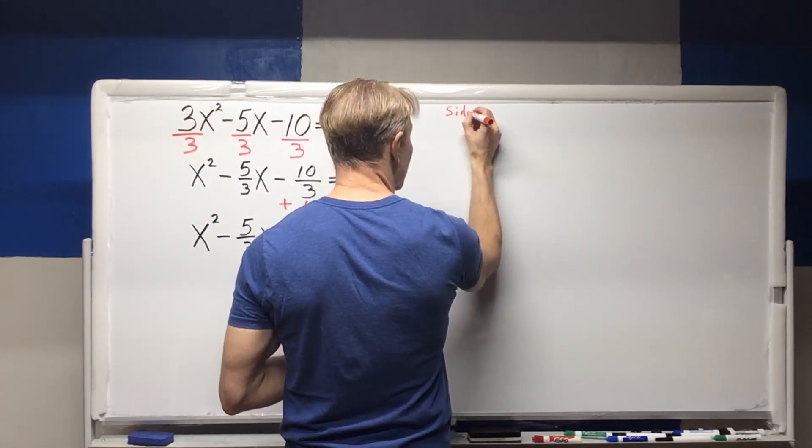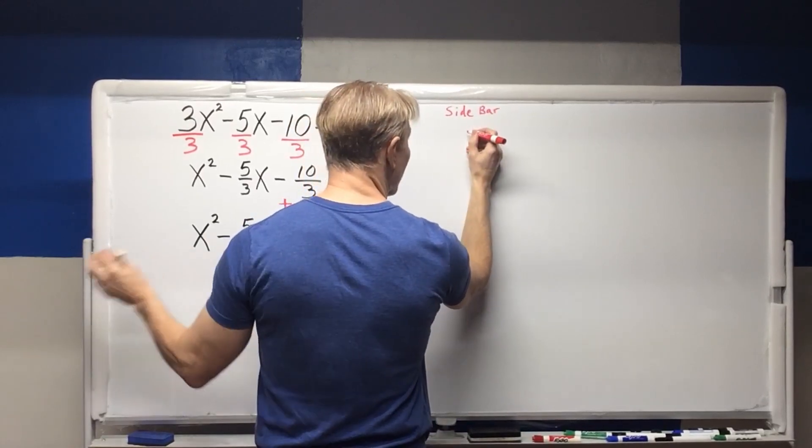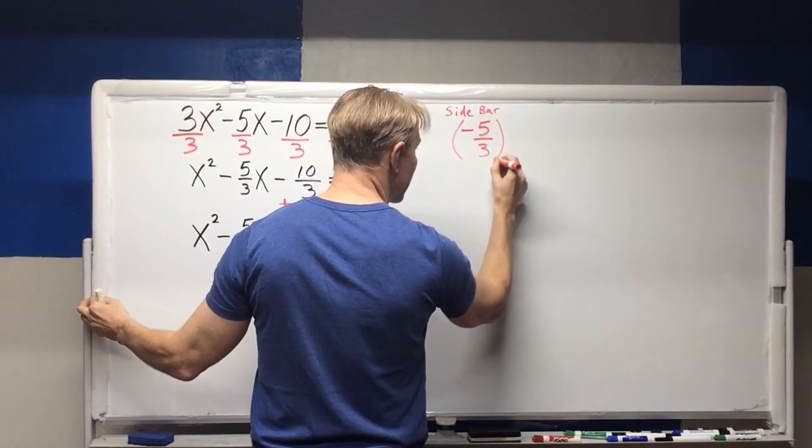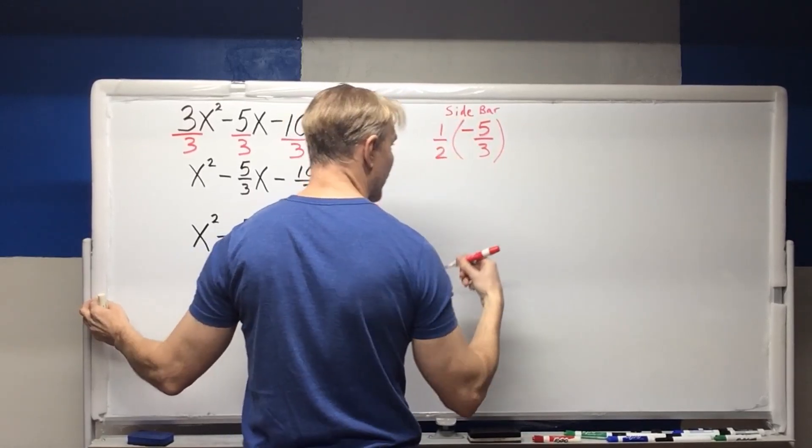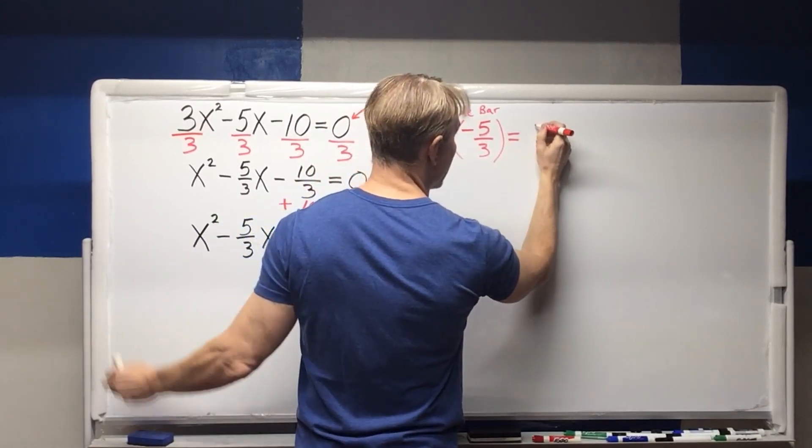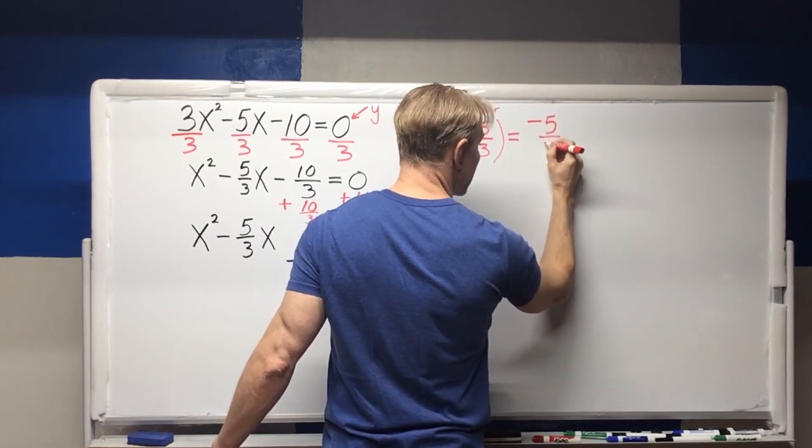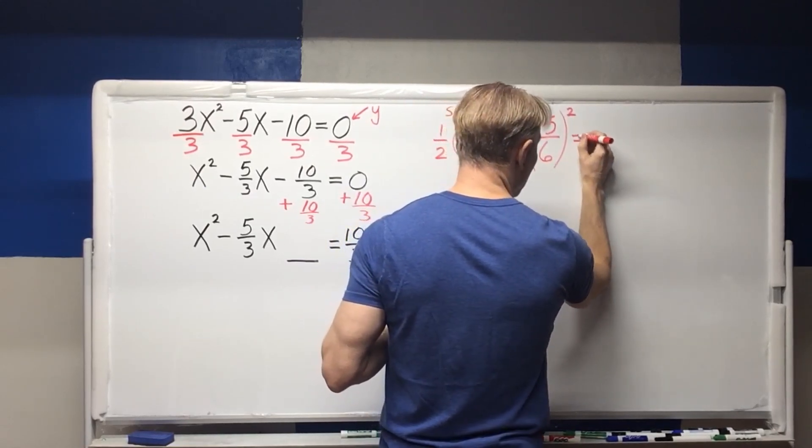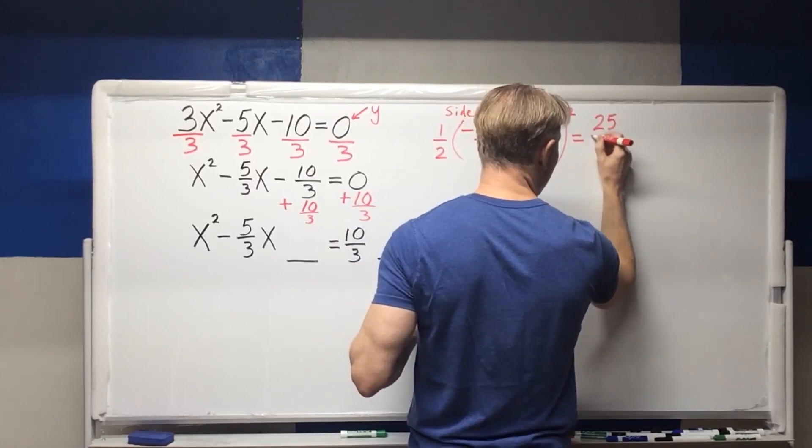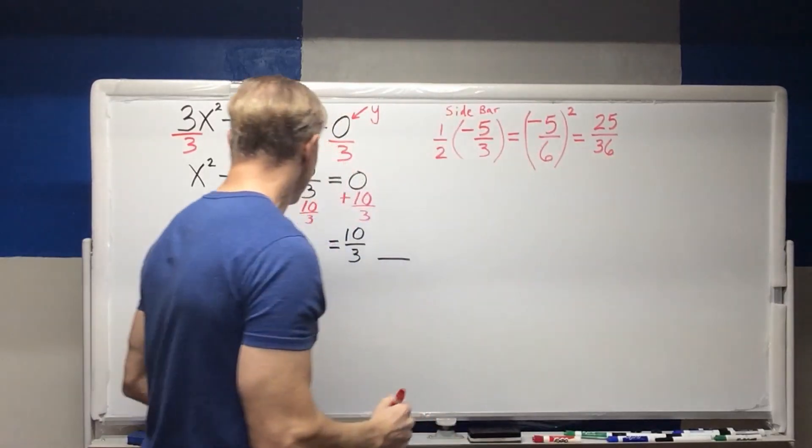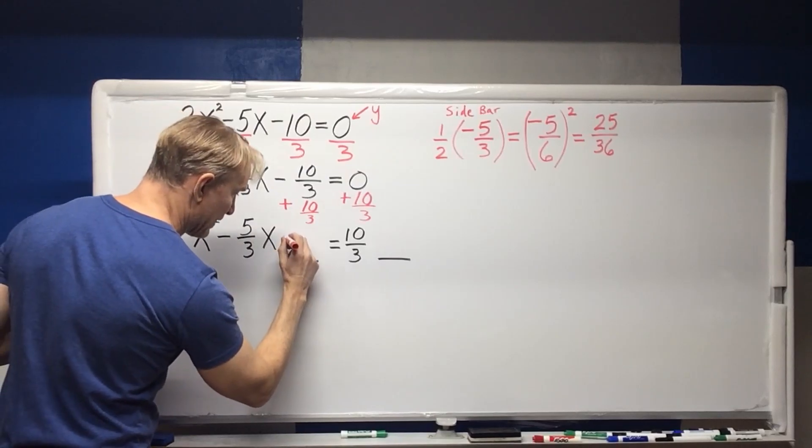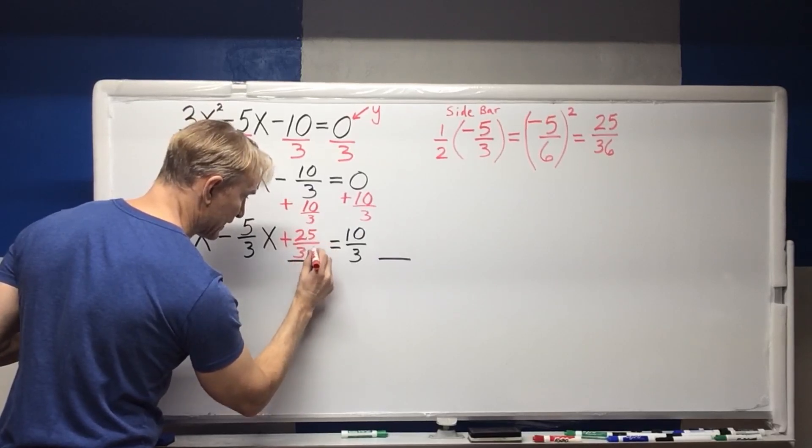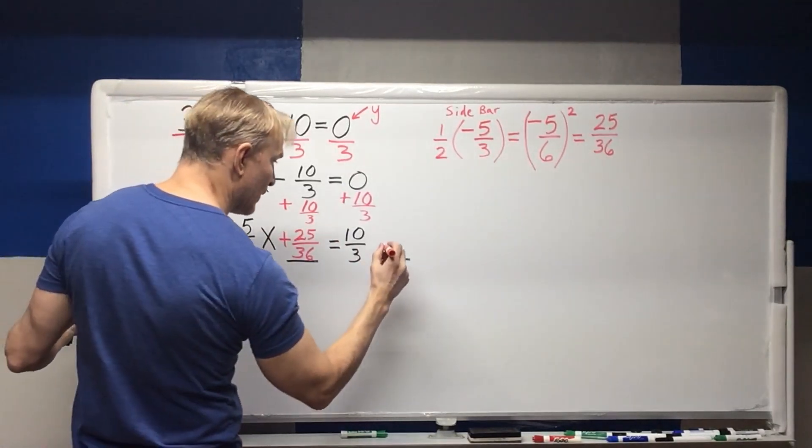So this is where I like to have my little sidebar up here. My x term coefficient is this negative five thirds and we're going to take half of it and then square it. I'm going to write negative five thirds and we're going to multiply that by one half. That's taking half of it. This is equal to negative five sixths. And then we have to square it. This is where we get the completing of the square part to get twenty five thirty sixths. We're going to complete here by adding twenty five thirty sixths to this side.